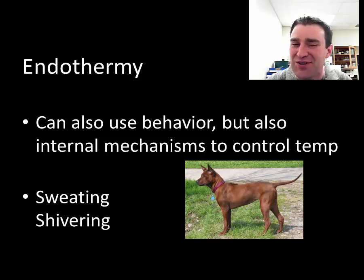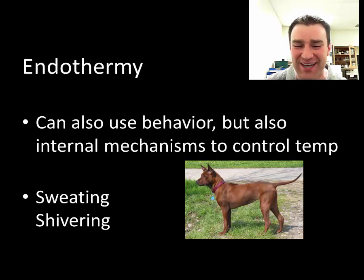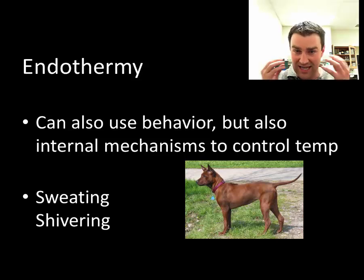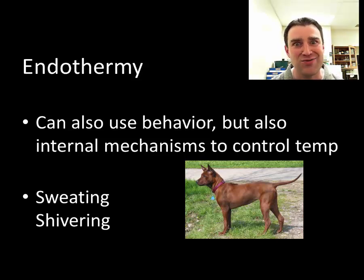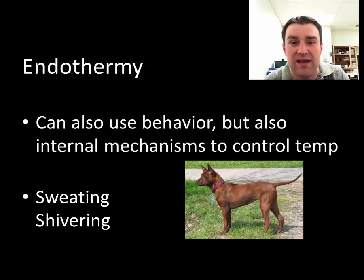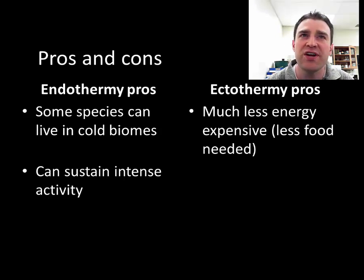Endotherms can also use behavioral thermoregulation, but we also have internal mechanisms. These include sweating or having water evaporate to take heat away from the body. Dogs can't sweat well with fur, but they can pant and release water vapor. We can release water vapor broadly on our skin and also shiver — contracting muscles to spend ATP and generate heat — using internal mechanisms to control our temperature.